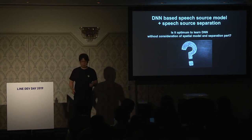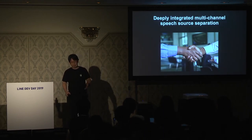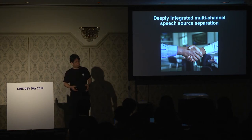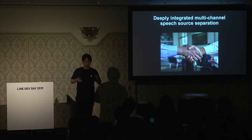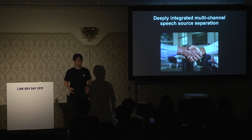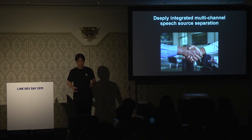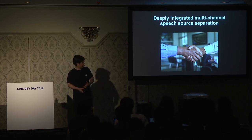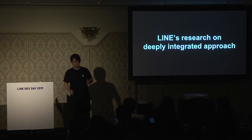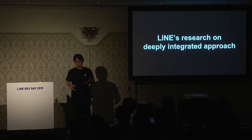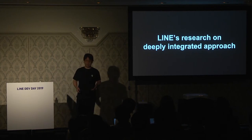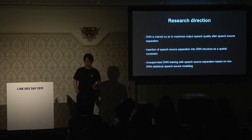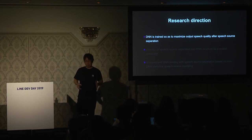Is this structure the most optimum one? At the time of DNN learning, spatial modeling and speech separation are not considered, but the purpose is to get a better separation signal. So that is just an interim measurement, not the ultimate goal. Therefore, we do not study DNN independently. It is important to learn in a form that integrates DNN and speech source separation so that the separated sound is better. I would like to introduce three research results under this concept.